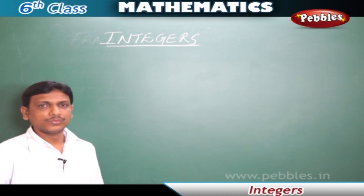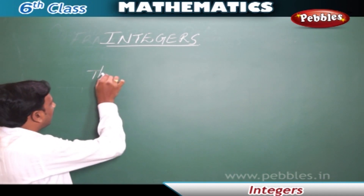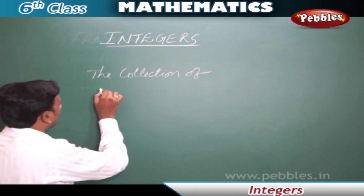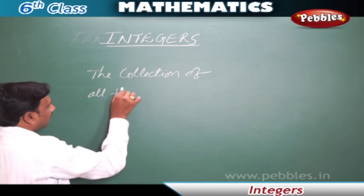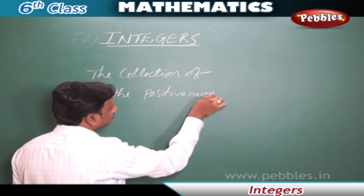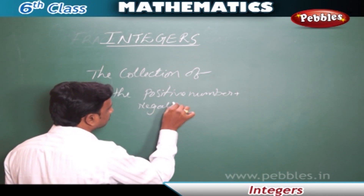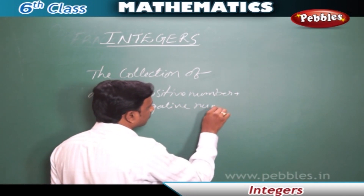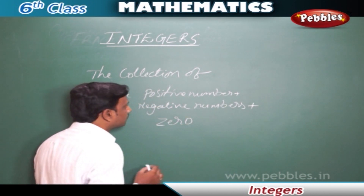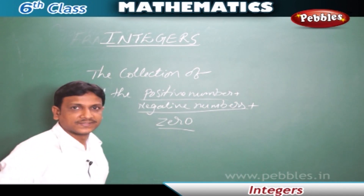Integers. In this chapter, we are going to learn about integers. What are integers? Integers are the collection of all the positive numbers, all the positive numbers plus negative numbers plus zero. So, the collection of positive numbers, negative numbers, and zero all together are called integers.